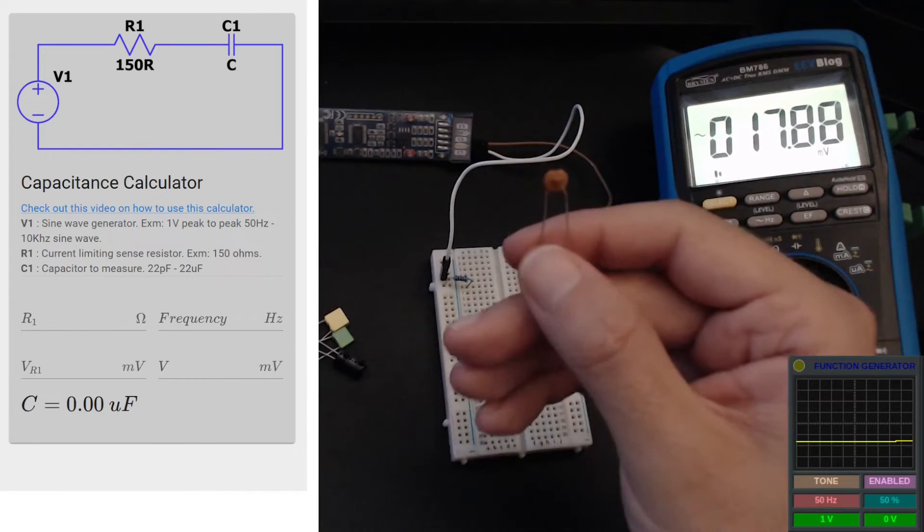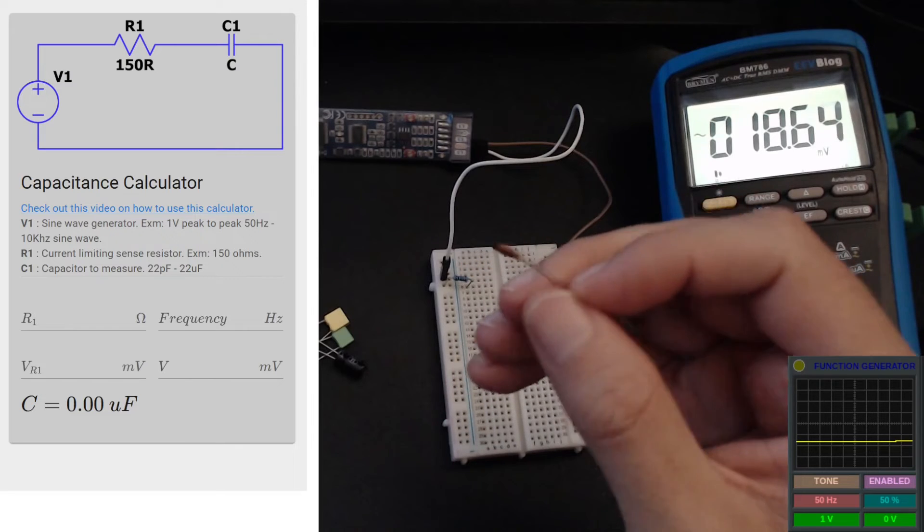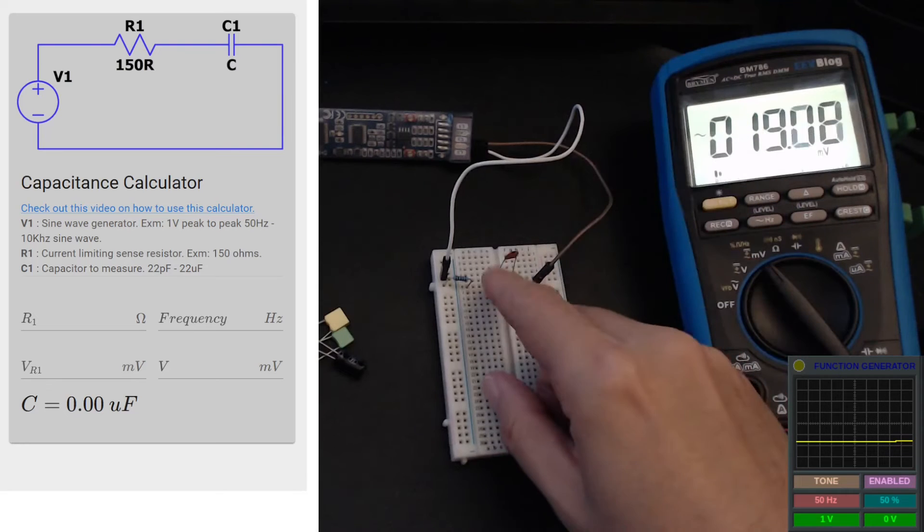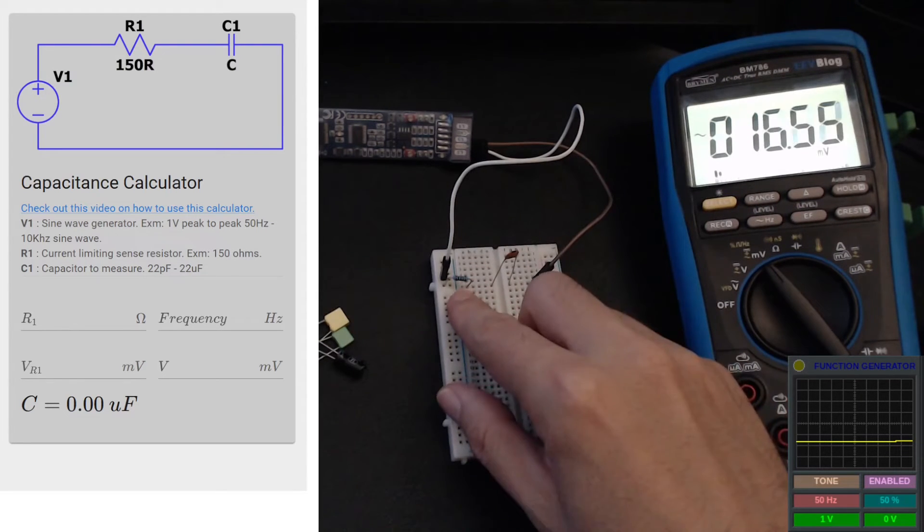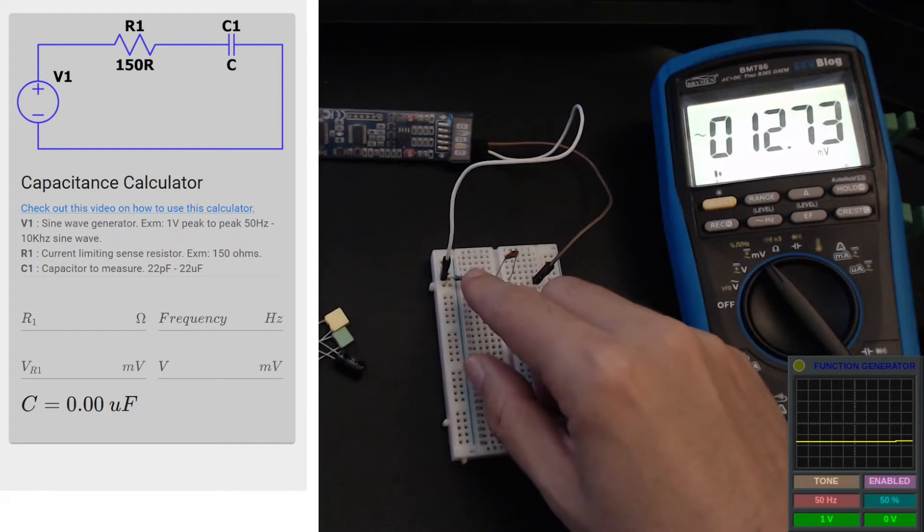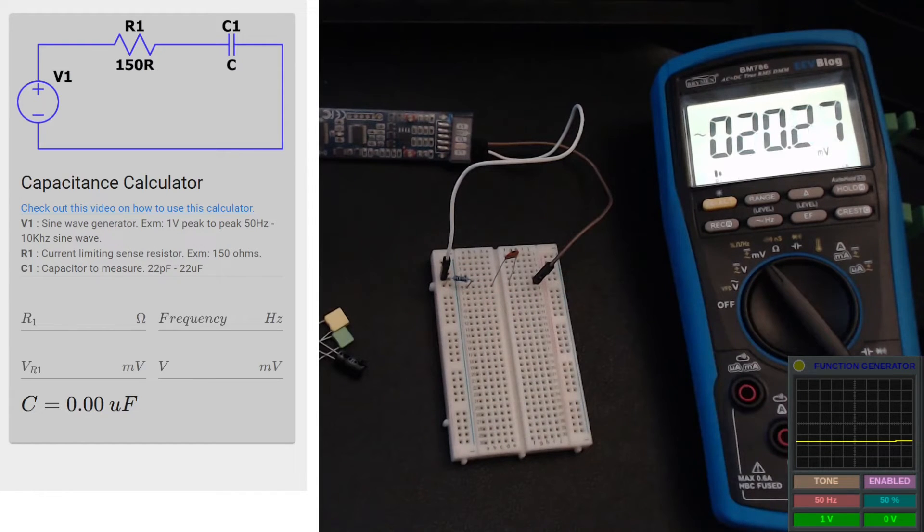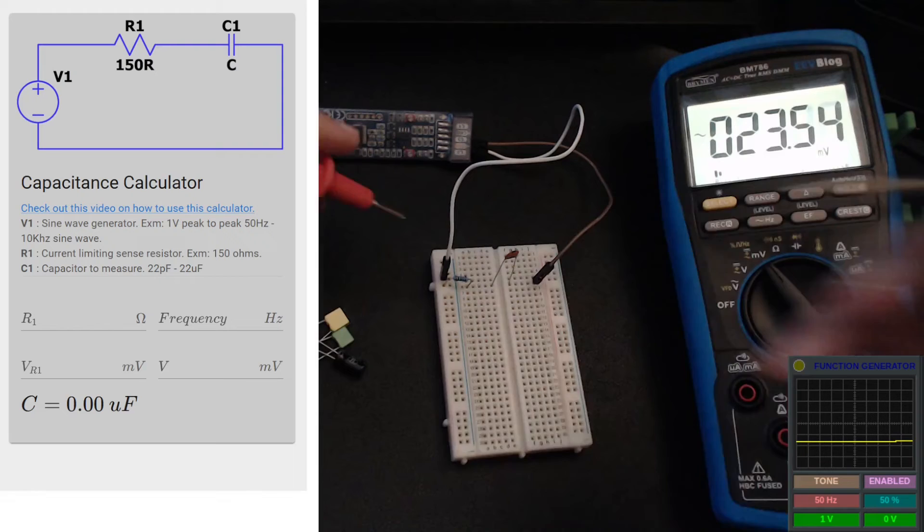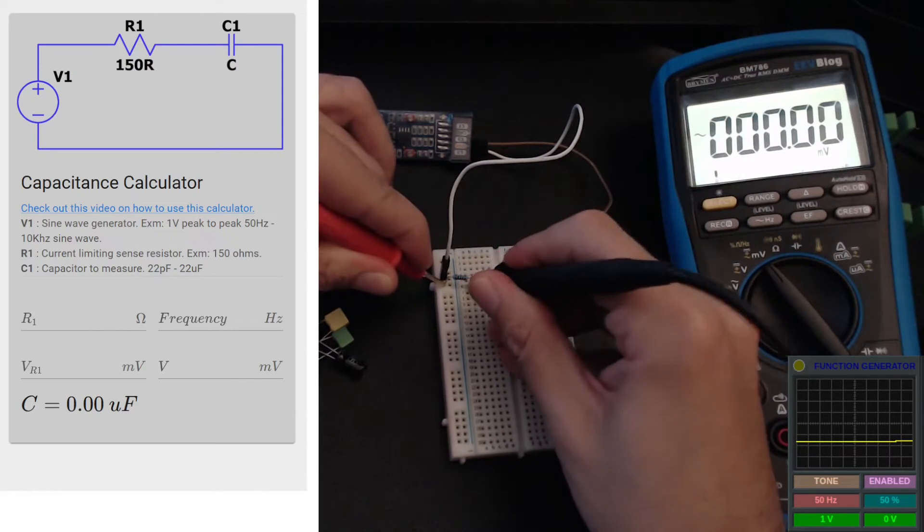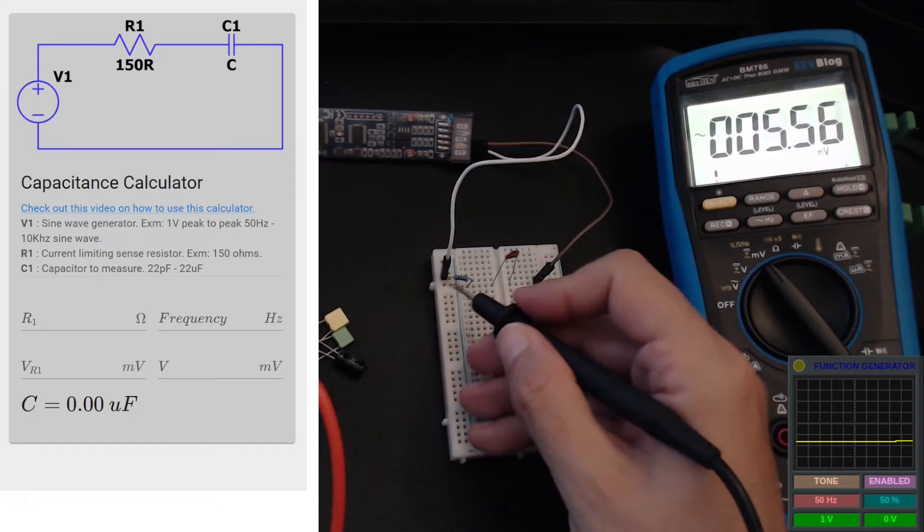So now let's go a little bit smaller. I have an 82 picofarad 5% tolerance ceramic cap here. Now obviously our 50 hertz signal is not good enough to measure that because the frequency isn't high enough for any current to pass through it. If there is no current then there won't be any voltage across the resistor and you won't be able to read anything. I'm just going to measure the voltage across the resistor to show what I mean - it's zero volts.